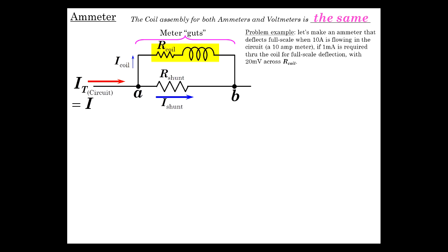And some additional data is that when it's swinging full scale, there's 20 millivolts across this resistance. So the wire coil has 20 millivolts across it at full scale reading.